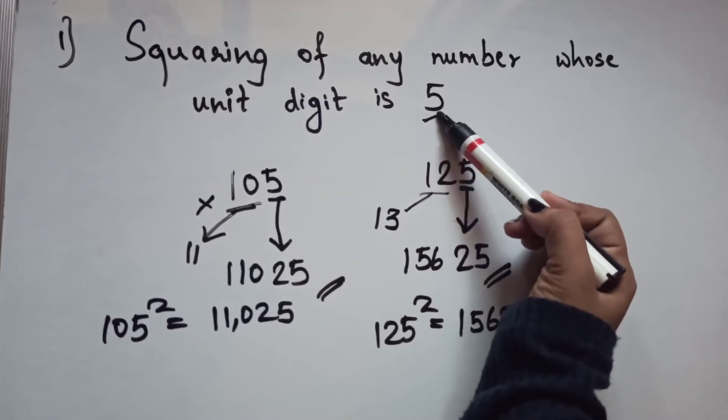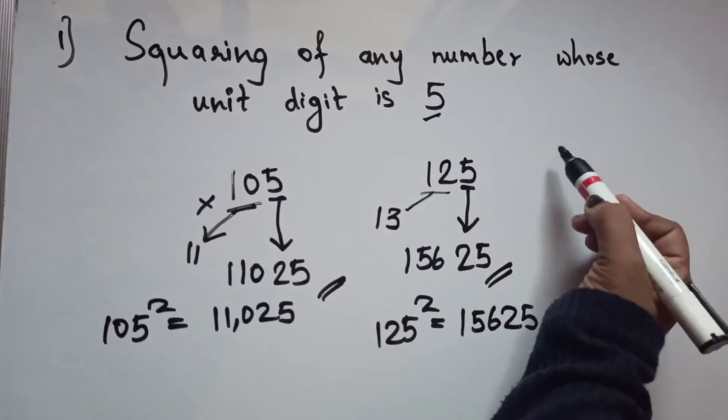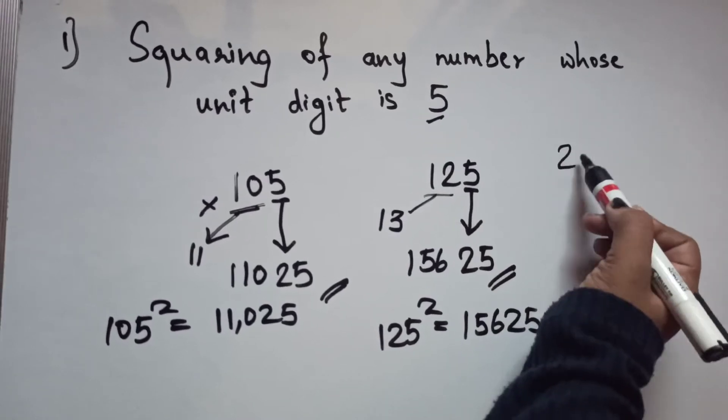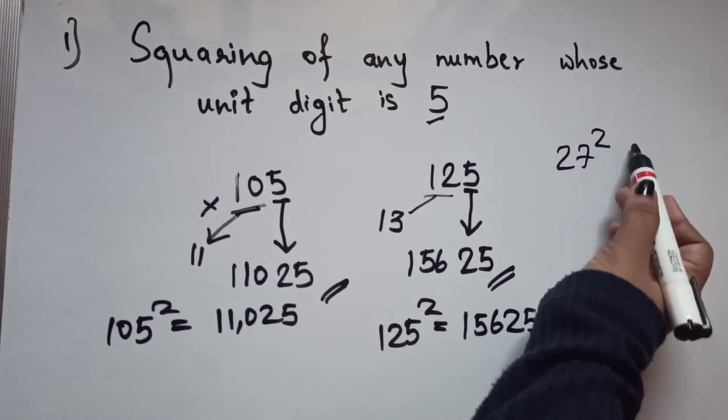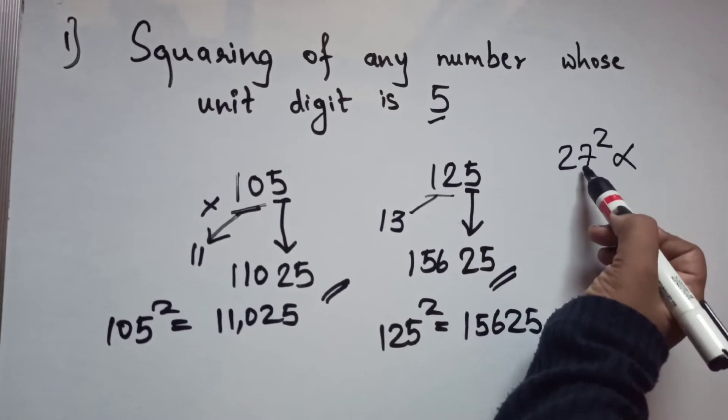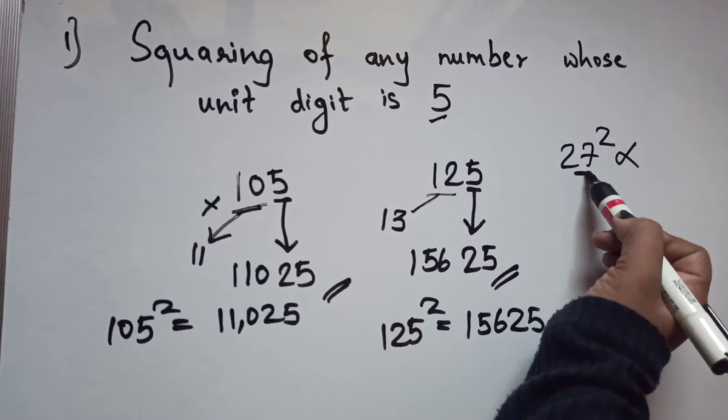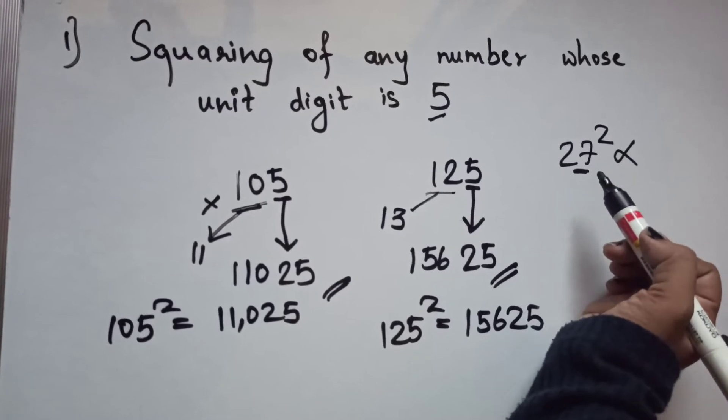Remember, the only condition is that the unit digit must be 5. You cannot apply this method to, say, 27 squared, because the unit digit is not 5.